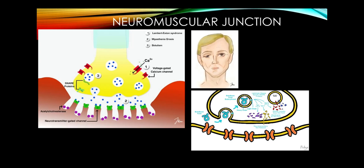Moving up to the neuromuscular junction, you need to know the two presynaptic problems. Lambert-Eaton syndrome has antibodies against voltage-gated calcium channels and is highly associated with small cell lung cancer — acetylcholine is not released. In botulism, the botulinum toxin cleaves snare proteins so acetylcholine synaptic vesicles never fuse with the presynaptic membrane. In myasthenia gravis, antibodies are against nicotinic receptors on muscle, causing only weakness. In Lambert-Eaton and botulism, acetylcholine is also not released for the parasympathetic system, causing dry mouth and constipation.